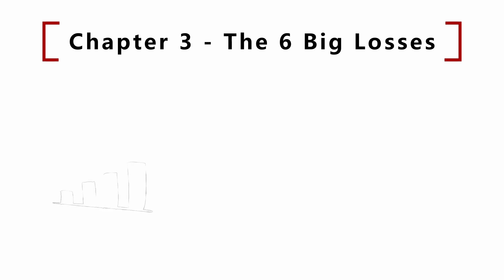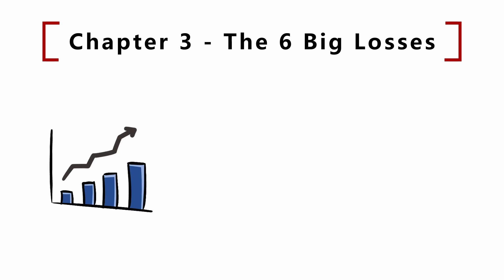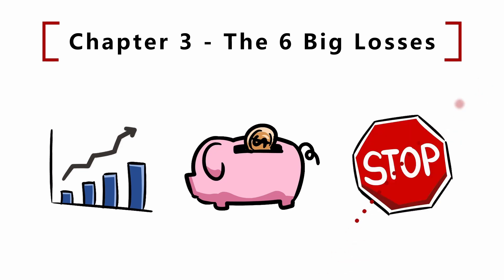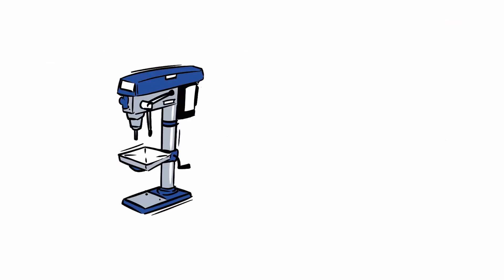Chapter 3: The Six Big Losses. One of the purposes of TPM is to make plants more efficient. By having more efficient systems, you can work more peacefully and help increase company profits. Making plants more efficient means eliminating the losses that reduce efficiency in general. For machinery, losses are classified into six categories.